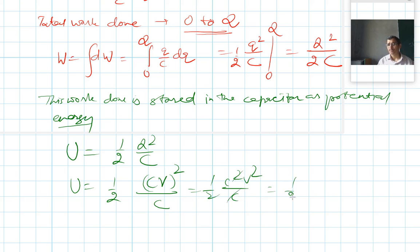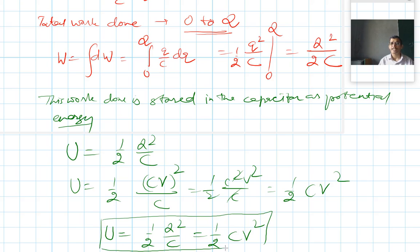Therefore it is (1/2) CV². So the energy stored in a capacitor can be written as (1/2) Q²/C or it can be written as (1/2) CV². This is the expression for energy stored in a capacitor.